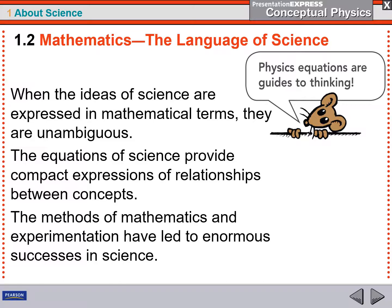And that's because the equations of math help us to make more compact and understandable relationships between various concepts, between what we call variables. So the methods of mathematics and experimentation have led to enormous successes in science.